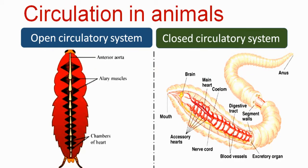In the closed circulatory system, the respiratory pigment hemoglobin is present in RBCs. The blood flow is fast and rapid, under higher velocity and higher pressure.